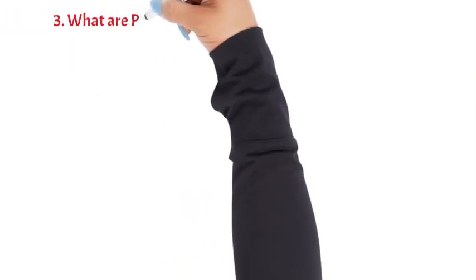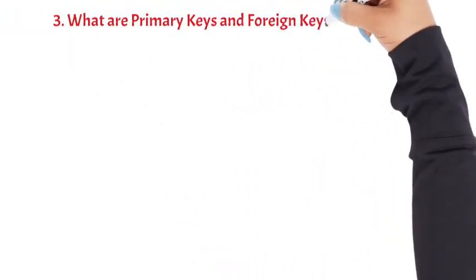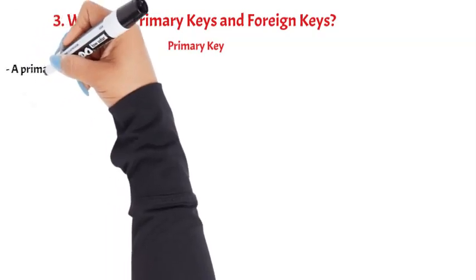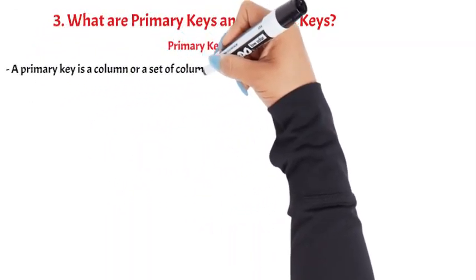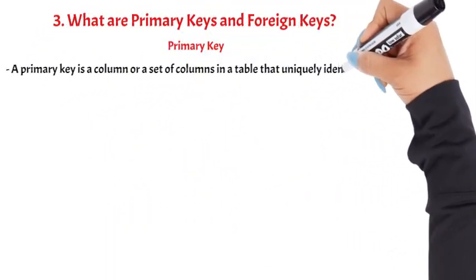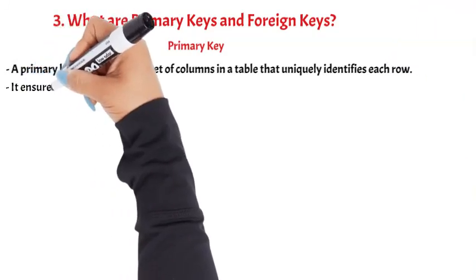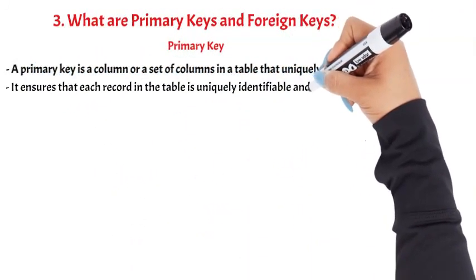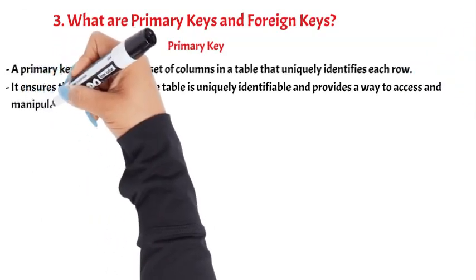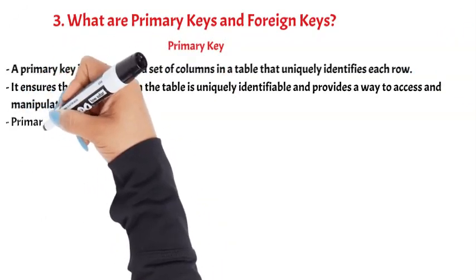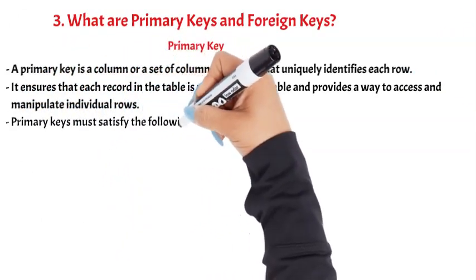What are primary keys and foreign keys? Primary key. A primary key is a column or a set of columns in a table that uniquely identifies each row. It ensures that each record in the table is uniquely identifiable and provides a way to access and manipulate individual rows. Primary keys must satisfy the following criteria.